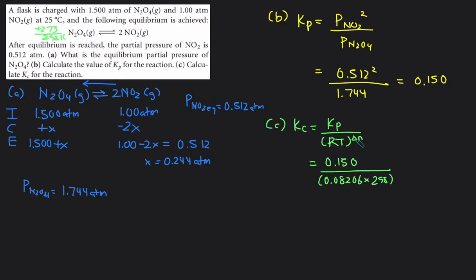Delta n is the change in the number of moles of gas. So we went from one mole of gas to two moles of gas. So this would be two minus one. So the delta n value would just be one. Then we just plug this into the calculator and we'll get a Kc value of 0.00613.